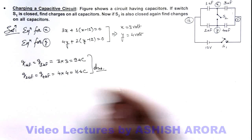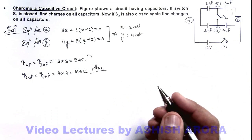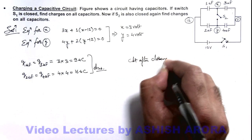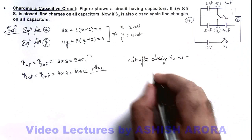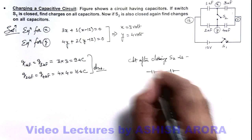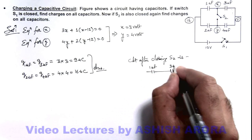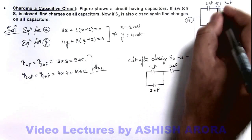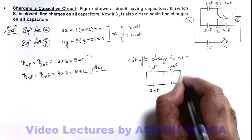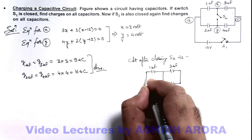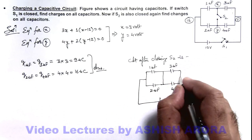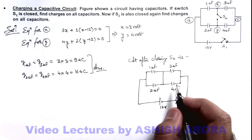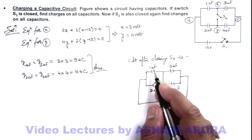Now if we also close switch S2, we can redraw the circuit. After closing S2, the middle branch is also introduced. The redrawn circuit has the 1 microfarad, 2 microfarad capacitors, the 4 microfarad capacitor, and the 12 volt battery, with both S1 and S2 closed. We can consider 1 and 2 microfarad to be in parallel, and 3 and 4 microfarad to be in parallel, with the two groups in series.